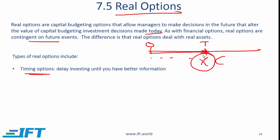At times you might not have this option because if you wait, a competitor might build the plant. But if you can spend some money — buy a license or buy something — that spending is like buying an option, and the benefit of that option is that you can now wait for six months. This is called a timing option.